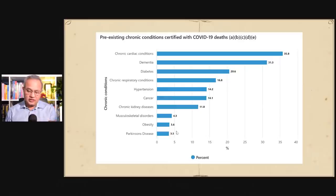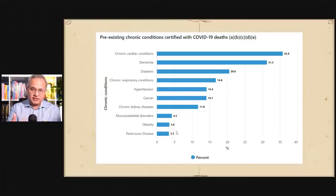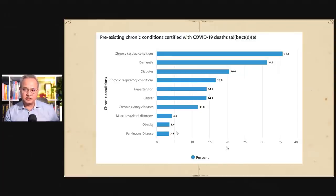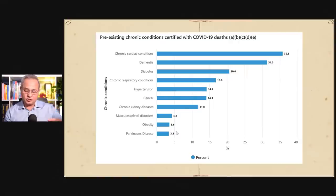The most important risk factor is chronic cardiac conditions. Fortunately, it is relatively easy to support the cardiac system if a patient is not yet in crisis. My request to everyone: take care of your cardiac conditions if you have any, and make sure you have them under control as much as possible.